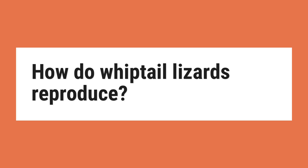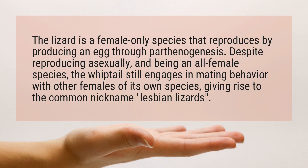How do Whiptail Lizards reproduce? The lizard is a female-only species that reproduces by producing an egg through parthenogenesis. Despite reproducing asexually and being an all-female species, the whiptail still engages in mating behavior with other females of its own species, giving rise to the common nickname 'lesbian lizards.'